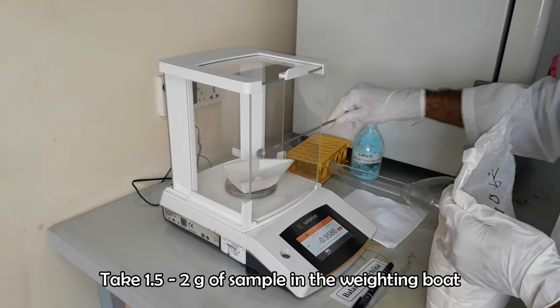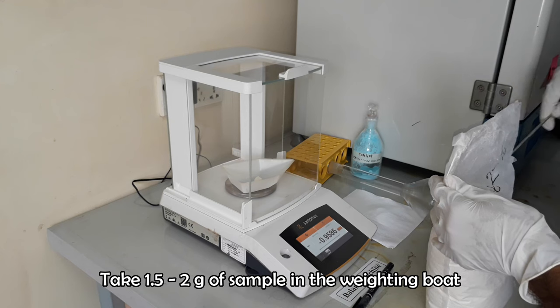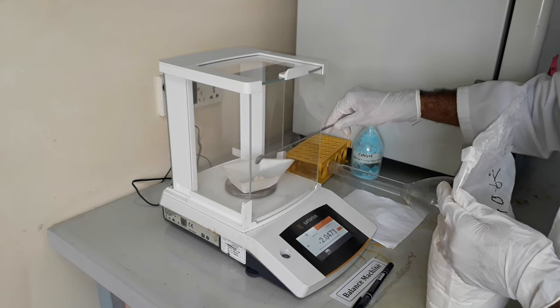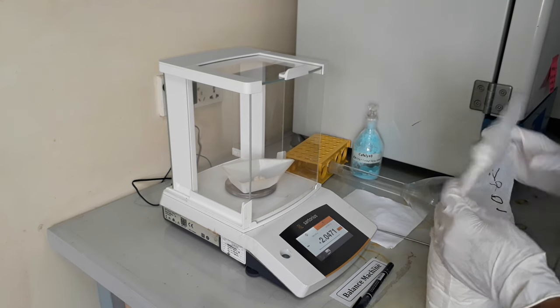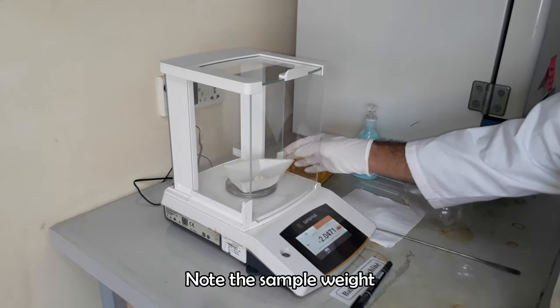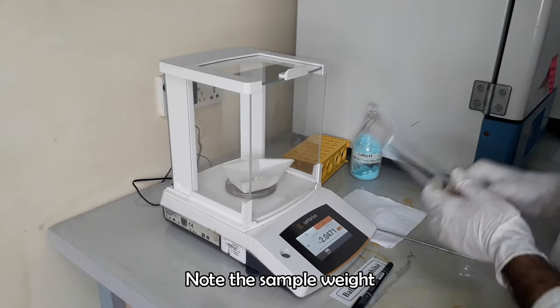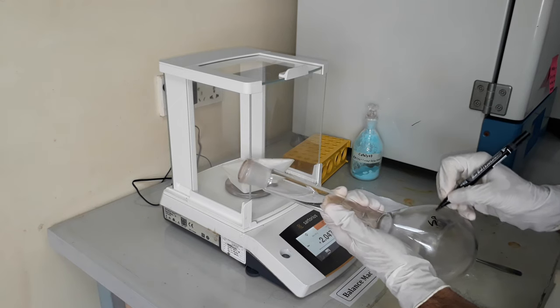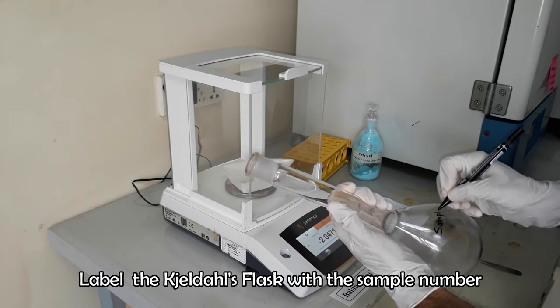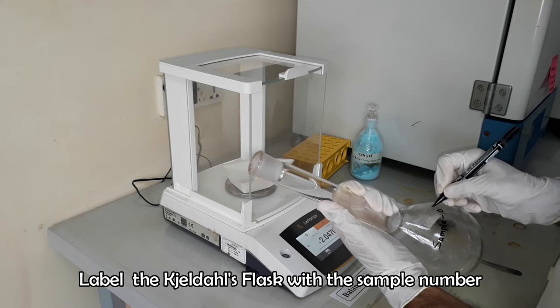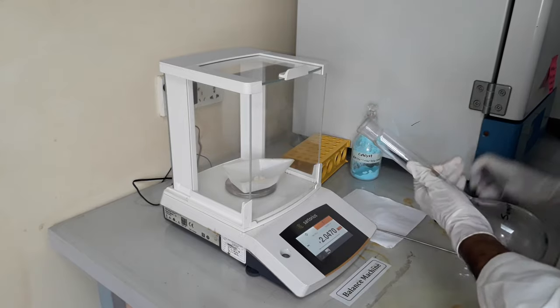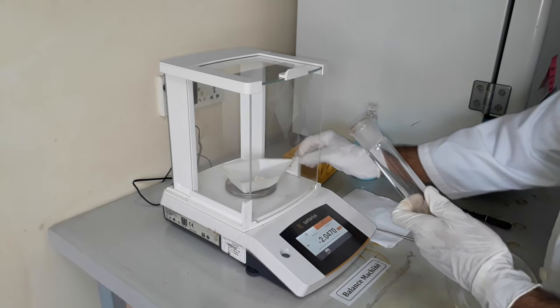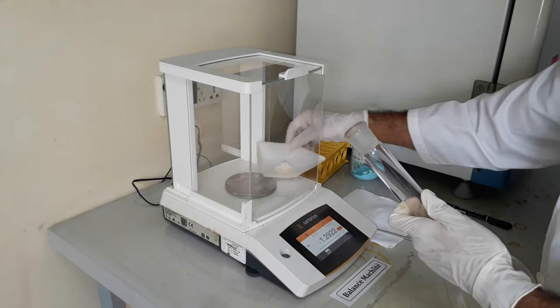Weigh 2 grams of homogenized portion of sample in a weighing boat. Label the Kjeldahl flask with sample number or sample ID. Add the weighted sample into the pre-labeled Kjeldahl flask.